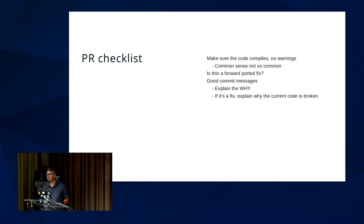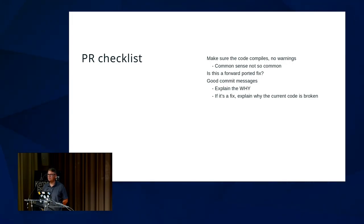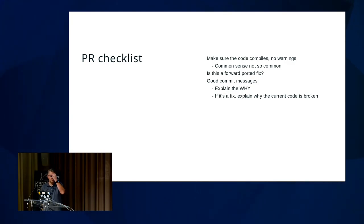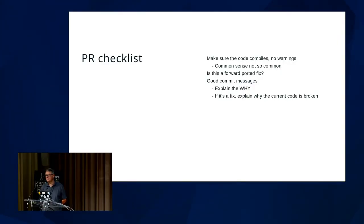Pull request checklist: common sense isn't so common. First, make sure it compiles — this seems like the most basic thing, but you'd be surprised how often a patch is sent out that doesn't compile. Sometimes someone fat-fingered a last-minute tweak before sending, sometimes they're running a different internal version and tried to forward-port it to upstream without testing. If that's the case, let people know it was forward-ported and hasn't been fully tested.